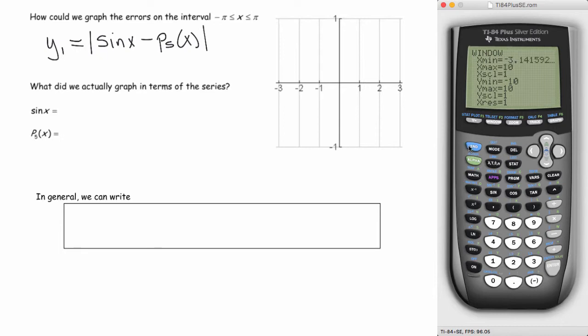So when you graph, you should end up getting this picture here, which looks like, it has a shape, and if you think about it, the shape makes sense. So I'm just going to sketch briefly what it looks like. It's something like that. In fact, it's even closer to the x-axis than I've actually given it credit for, but this is fine. So again, this is the graph of the errors.